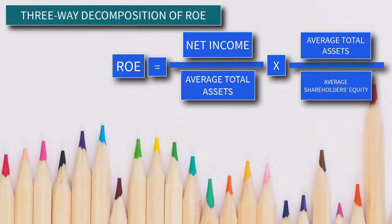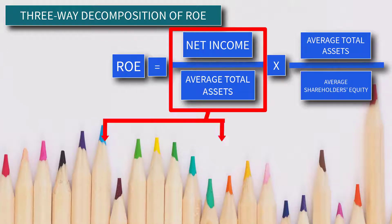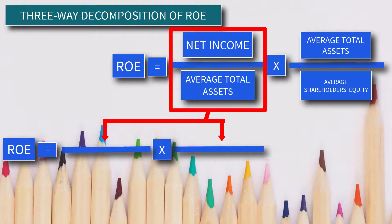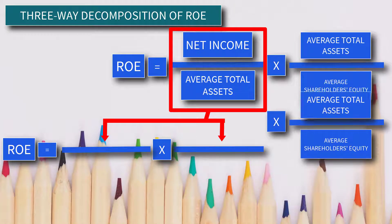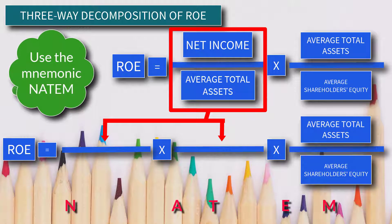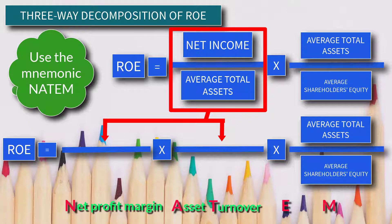How about the three-way decomposition of ROE? This can be done by decomposing Return on Assets into two components and bringing down the Equity Multiplier. We can use the mnemonic NATM: N stands for Net Profit Margin, AT means Asset Turnover, and EM for Equity Multiplier.